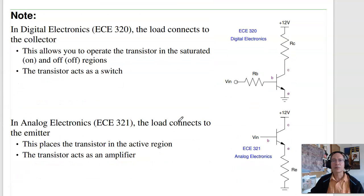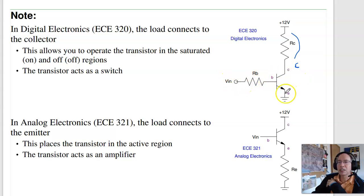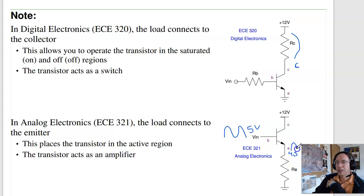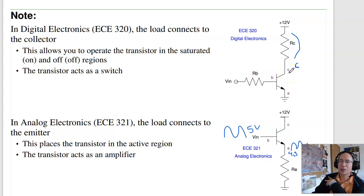A couple of notes. In digital electronics, connect the load to the collector: 5 volts is on, 0 volts is off, and when on you've got the full 12 volts across your load. In analog electronics, we put the load on the emitter side — then as VIN goes up and down, the emitter follows it, but you can't get the full 12 volts across the load, and the transistor is dissipating a lot of power (say 7.7 volts across it — it's going to get hot, hence the heatsink). In digital operation, it's either 0 amps or 0-ish volts, so power is always close to zero and the transistor doesn't get hot. In ECE 320, the load goes on the collector side.